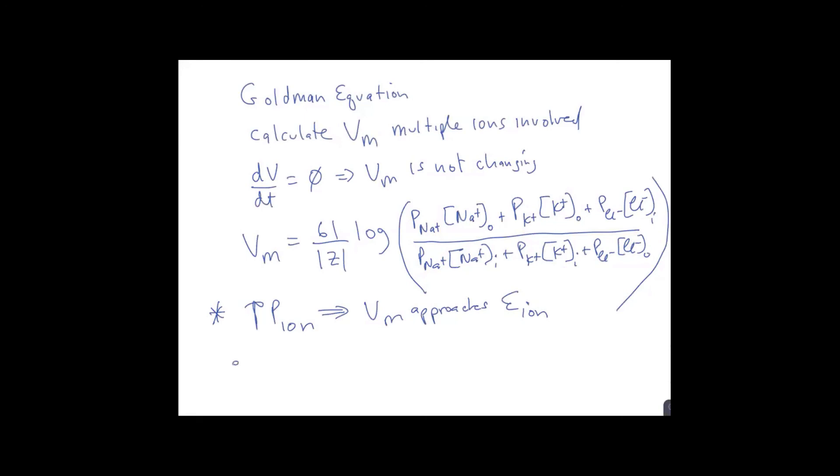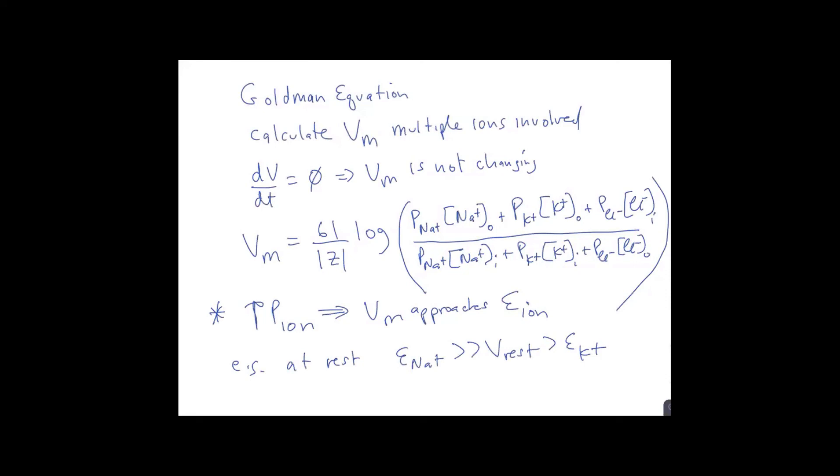So the rest lies in between the equilibrium potential for sodium and the equilibrium potential for potassium. Remember, this is a negative number, typically under normal conditions, and the equilibrium potential for sodium is a positive number.